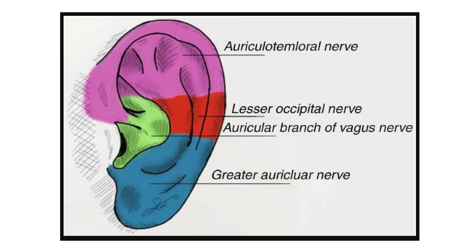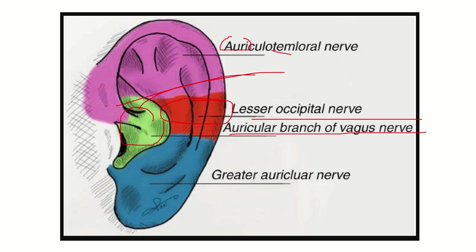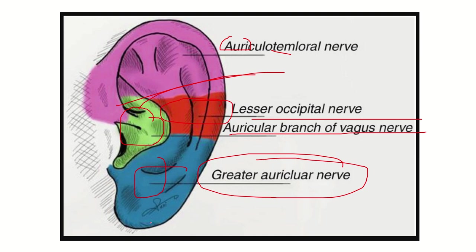Let's identify the nerves supplying this area. The upper part is supplied by the auriculotemporal nerve. A smaller area is supplied by the lesser occipital nerve. The auricular branch of the vagus nerve supplies another area. The lower part is supplied by the greater auricular nerve. So there are four important nerves that convey sensation from this region.